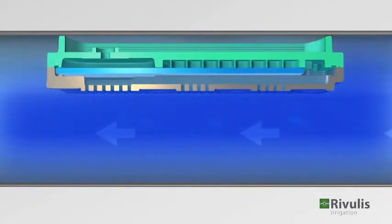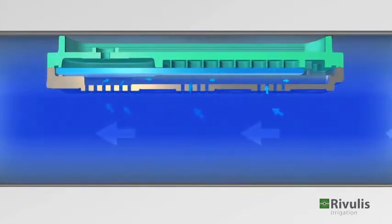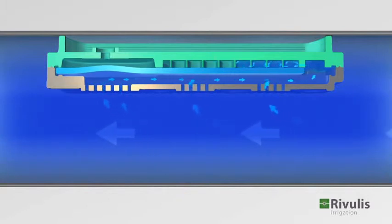The water entering through the filter pushes the lower part of the membrane towards the regulating chamber using the pressure from the tube. The labyrinth through which the water passes reduces the energy and creates a lower pressure on the top side of the membrane.